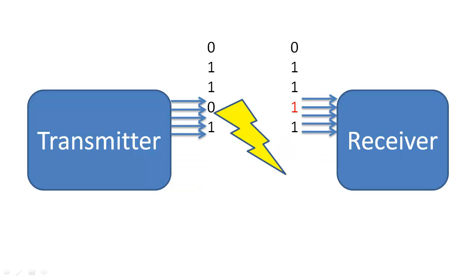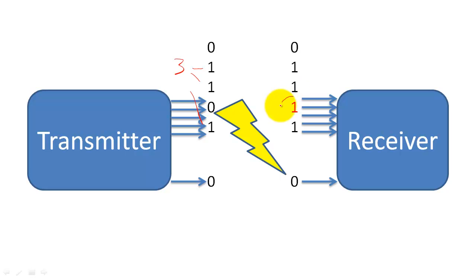Alternatively, we could require that the transmitting component send an even or odd number of 1s in its transmission. In this case, we would simply add one more bit to the transmission, and we would set this bit to be a 1 or a 0, depending on the number of 1s in the original transmission. The strategic addition of a parity bit in a code can increase the Hamming distance of the whole code by 1, and it enables detecting and potentially correcting more errors.